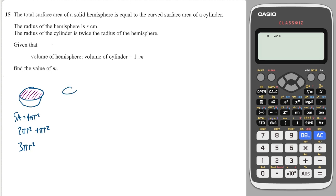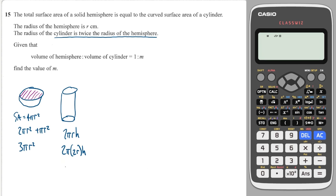And the curved surface area of a cylinder — that's given again in your formula booklet — the curved surface area is just 2πr, which is the circumference of the circle multiplied by the height. Because the cylinder's radius is twice the size of the hemisphere's radius, if I call the hemisphere's radius r then I'm going to have to call the cylinder's radius 2r. So therefore the cylinder surface area is 4πrh.